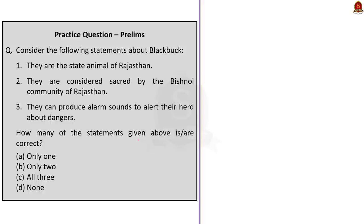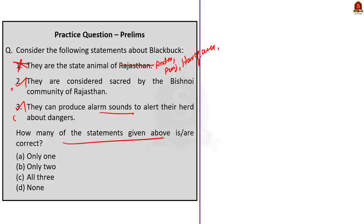The second question gives three statements about black buck and asks how many are correct. Statement one — it is the state animal of Rajasthan — is incorrect, because black buck is the state animal of Andhra Pradesh, Punjab and Haryana. Statement two — they are considered sacred by the Bishnoi community of Rajasthan — is correct. Statement three — they can produce alarm sounds to alert their herd about danger — is also correct, as black buck are social animals living in groups. Since only two statements are correct, the answer is option B, only two.